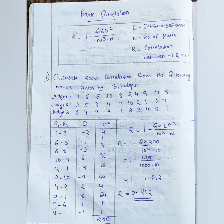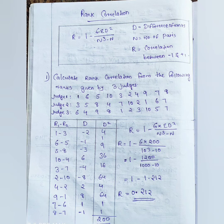We substitute into the equation: R equals 1 minus 6 times sigma d squared divided by n cubed minus n. Here sigma d squared equals 200, and n equals 10, so n cubed is 1000. Therefore R equals 1 minus 1200 divided by 1000 minus 10, which gives 1 minus 1200 divided by 990.